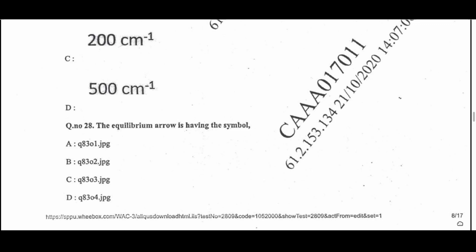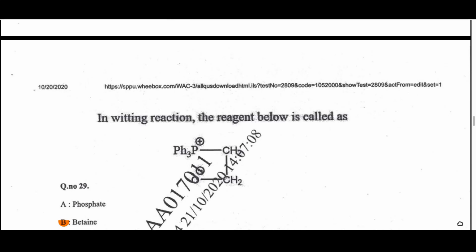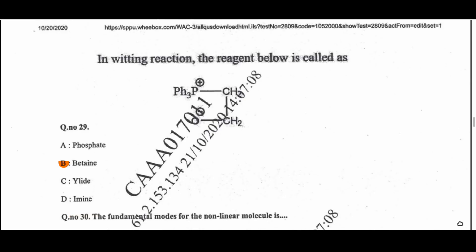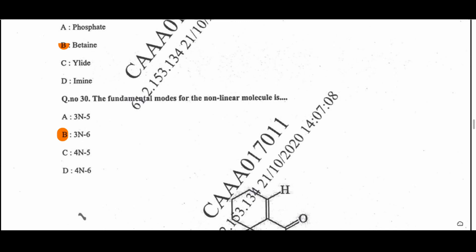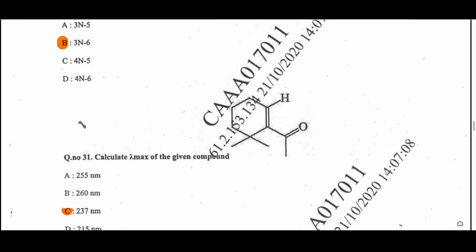Question 28: The question involves equilibrium arrows, which have half-arrows in forward and backward directions — there is no such option here. Question 29: In the Wittig reaction, the intermediate is called betaine (B10). Question 30: The fundamental modes of vibration of a non-linear molecule are given by the formula 3N − 6; option B is the correct answer.